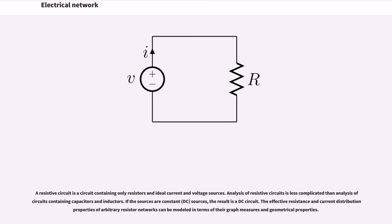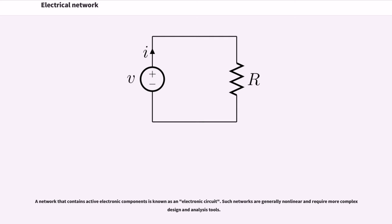The effective resistance and current distribution properties of arbitrary resistor networks can be modeled in terms of their graph measures and geometrical properties. A network that contains active electronic components is known as an electronic circuit. Such networks are generally non-linear and require more complex design and analysis tools.